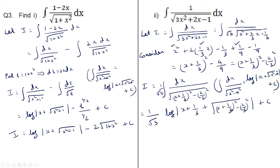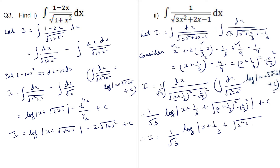Now (x plus 1 by 3) whole squared minus (2 by 3) whole squared is nothing but what we got from x squared plus 2x by 3 minus 1 by 3, so we can substitute back. Therefore i equals 1 by root 3 into log mod of (x plus 1 by 3) plus root of (x squared plus 2x by 3 minus 1 by 3) plus c. So this is the integral of the given function.